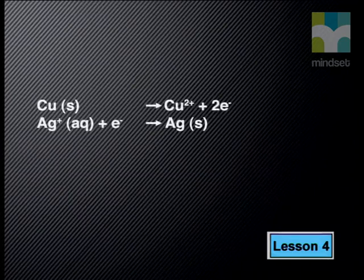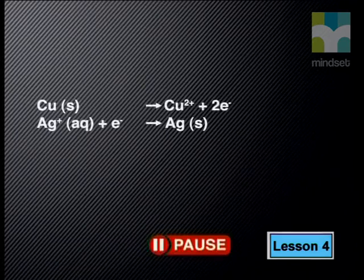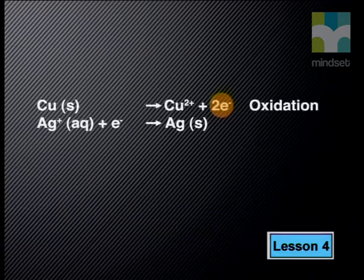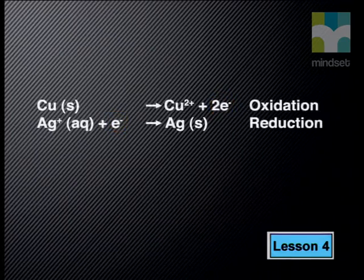The first half reaction is: Cu → Cu²⁺ + 2e⁻. The second half reaction is: Ag⁺ + e⁻ → Ag. Can you identify which half reaction is oxidation and which is reduction? The copper lost two electrons and formed a copper ion — a loss of electrons is oxidation. The silver ion gained electrons, so this half reaction is reduction.